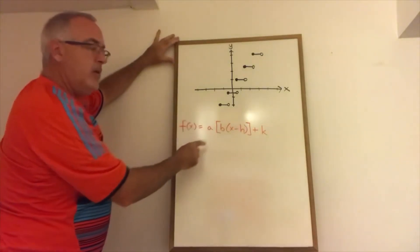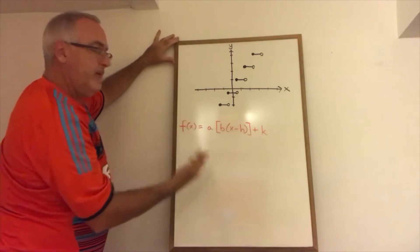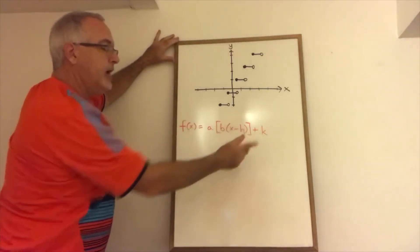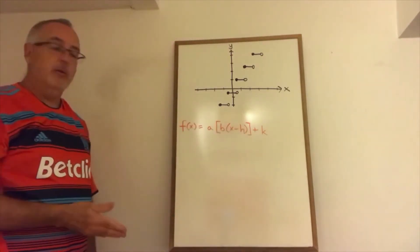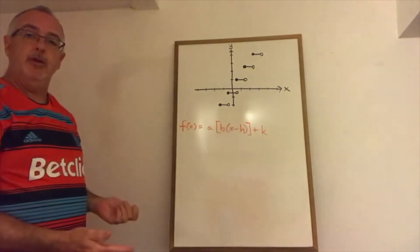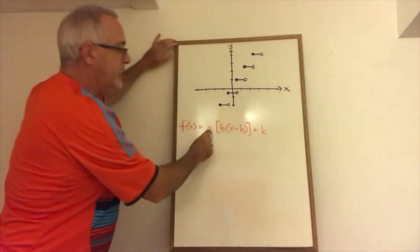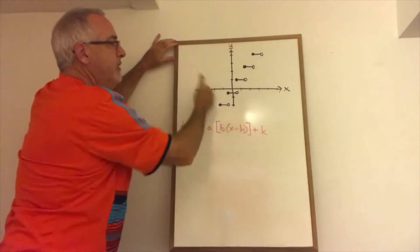The general form for the step function is given here and we have four parameters a, b, h, and k. We have to find all four of those in order to be able to write out the equation. But all the information we need to find those four is given here in the graph.